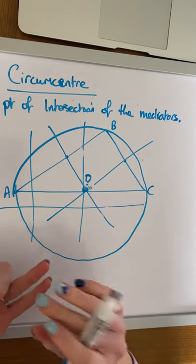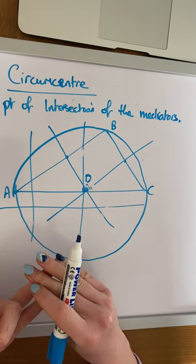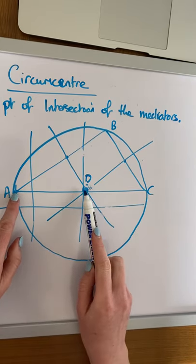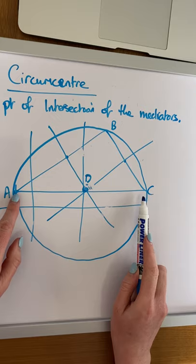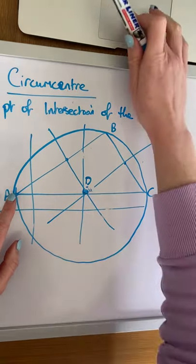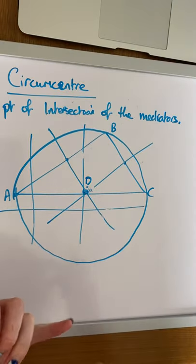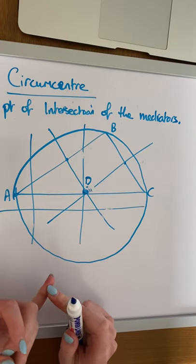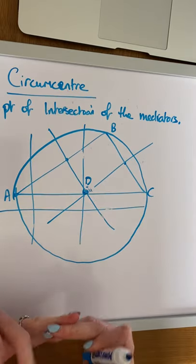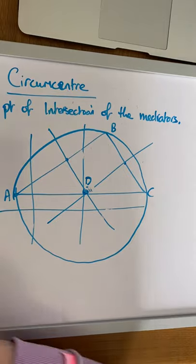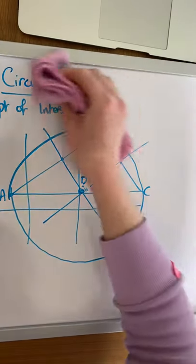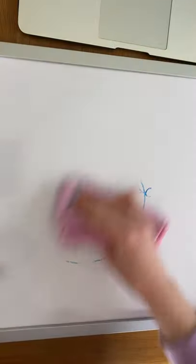To find the circumcenter algebraically: get the midpoint of AC, find the slope of AC, then find the perpendicular slope. You now have a point on the line and the slope, so form the equation using y minus y1 equals m times x minus x1. Then find the point of intersection of two of the mediators.